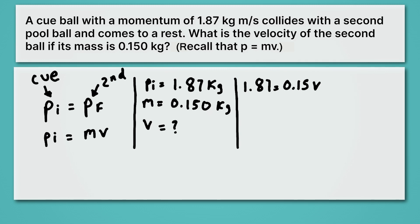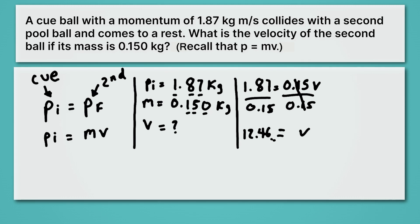All we have to do to solve for velocity is divide both sides by 0.15. That gives us velocity all by itself, and 1.87 divided by 0.15 gives us 12.46. We want to round that for sig figs — we have three sig figs in our momentum initial and three sig figs in our mass, so we round to three sig figs, giving us 12.5. The units are meters per second. So from the initial momentum of the pool ball, we can solve for the velocity of the second ball it hits. That's one application of conservation of momentum.